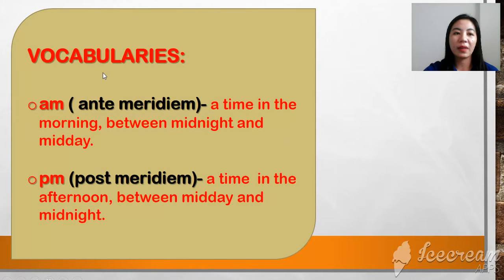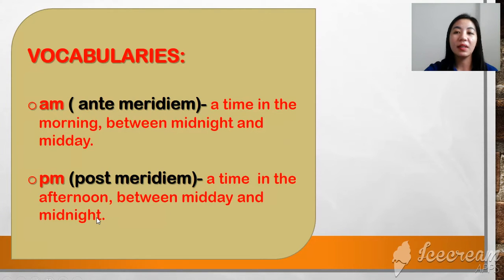We have some vocabularies here to remember. We have AM or anti-meridian, which means the time in the morning between midnight and midday, in between the midnight, the 12, and the midday. For PM, post-meridian, it is a time in the afternoon between midday and midnight.